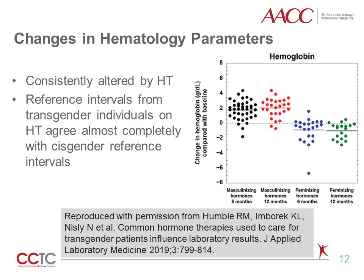We will focus on a couple areas of interest regarding observed changes in laboratory values. Several hematology parameters are consistently altered by hormone therapy. Hematocrit and hemoglobin are among the most striking. This study demonstrated an increase in hemoglobin from baseline in patients taking masculinizing hormones for six months, shown by the black dots, which is sustained after 12 months of hormone therapy, the red dots. In patients taking feminizing therapy, a decrease is observed at six months, shown by the blue dots, and maintained following 12 months of hormone therapy, the green dots. Another recent article found that established reference intervals agreed almost completely with intervals from a cisgender population.